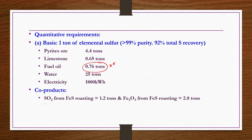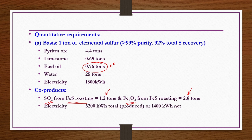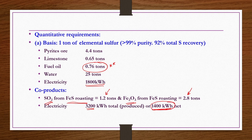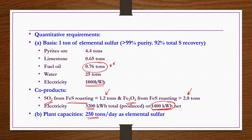The coproducts are SO2 and Fe2O3 from FeS roasting in fluidized bed roasters. Per ton of elemental sulphur: 1.2 tons SO2 and 2.8 tons Fe2O3 are obtained. Total electricity produced is 3200 kilowatt hours, but only 1800 kilowatt hours is used in the process, giving a net production of 1400 kilowatt hours. Plant capacity is generally 250 tons per day of elemental sulphur.